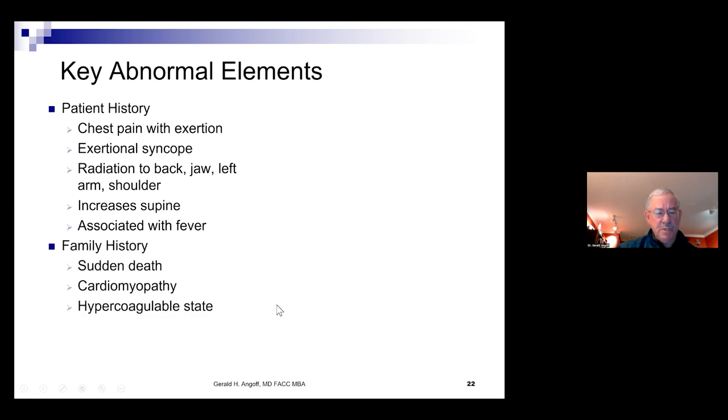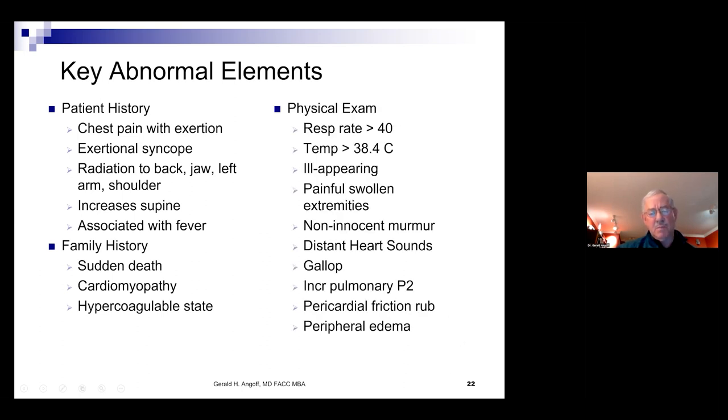Exertional chest discomfort related to syncope, radiation that suggested a cardiac cause. And these two elements, increasing with supine associated with fever, were aimed at identifying pericarditis. Family history was part of the guideline, particularly sudden death, cardiomyopathy. Physical examination was far less helpful than a careful history. And elements were aimed at acute illness such as pericarditis and myocarditis.